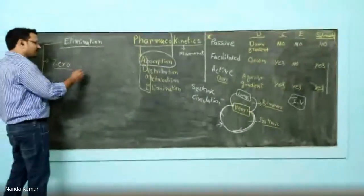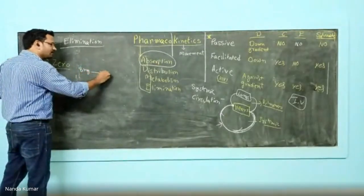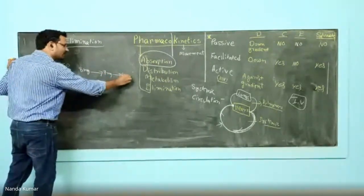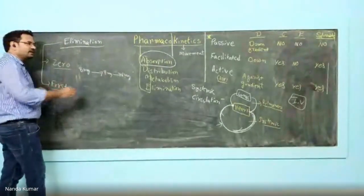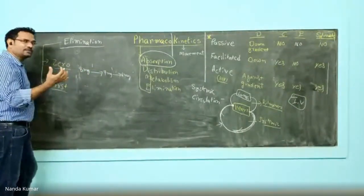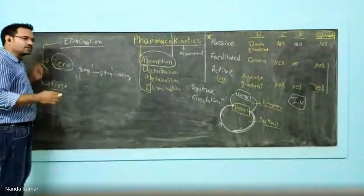Let's say you have 8 mg of drug. After a certain amount of time it becomes 7 mg, then after certain time it becomes 6 mg. What is happening here? 1 mg is getting eliminated, so a constant amount is getting eliminated.